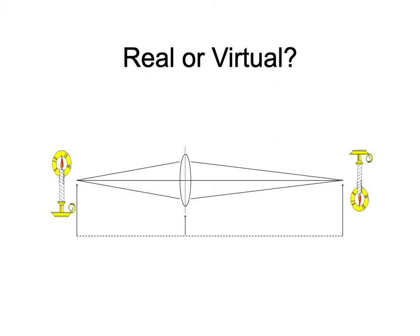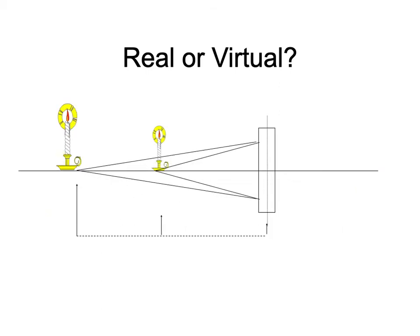Real or virtual is the easiest thing. As long as rays of light move from left to right, in a simple object-lens-image problem the order should always be object, lens, image. If one of those things is offside, it's virtual; if it's not offside, it's real. So an object to the left of the lens is real, and an image to the right of the lens is real. But here we have a real object to the left and a virtual image to the left — it's offside. This will always give you the right answer for real or virtual.